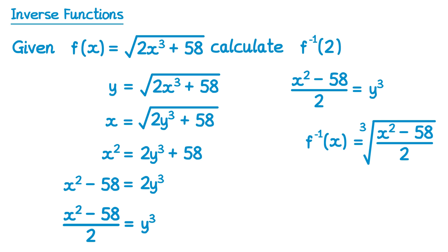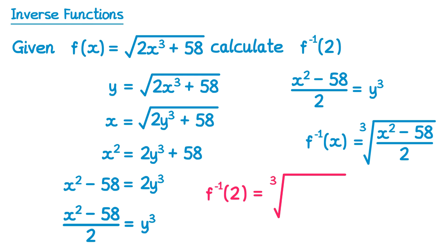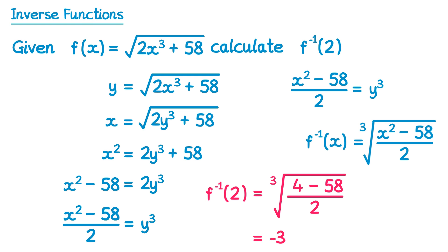We wanted to find the value when x = 2. So we substitute x = 2 into the inverse function: the cube root of (2² − 58)/2 = ∛((4 − 58)/2) = ∛(−54/2) = ∛(−27) = −3. That's your answer.